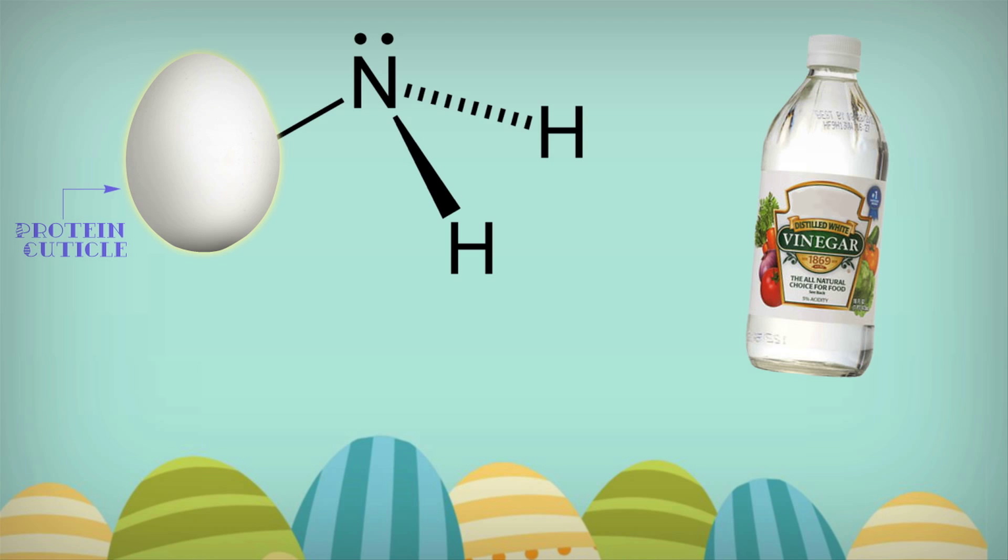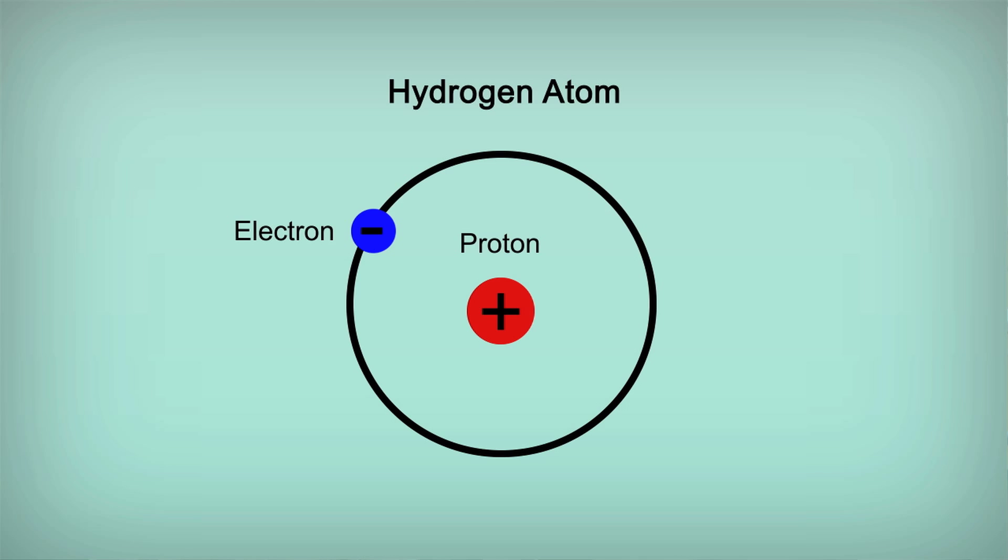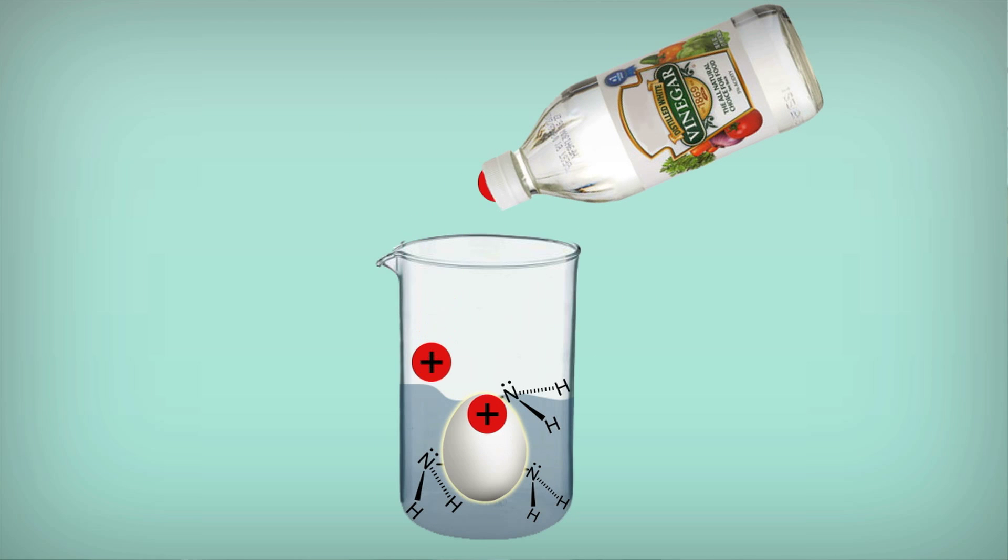The definition of an acid is that it releases hydrogen ions. Think of it this way: a hydrogen atom is one proton and one electron. Remove the electron and all you have is the proton with a positive one charge. The acetic acid, or vinegar, releases these hydrogen ions into solution.